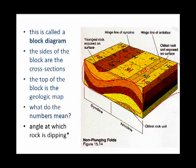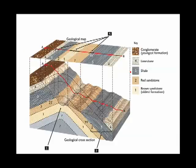So the angle at which the rock is dipping is going to be different along different parts of this geologic map. In the real world, however, this surface of the earth is not a perfect horizontal surface.